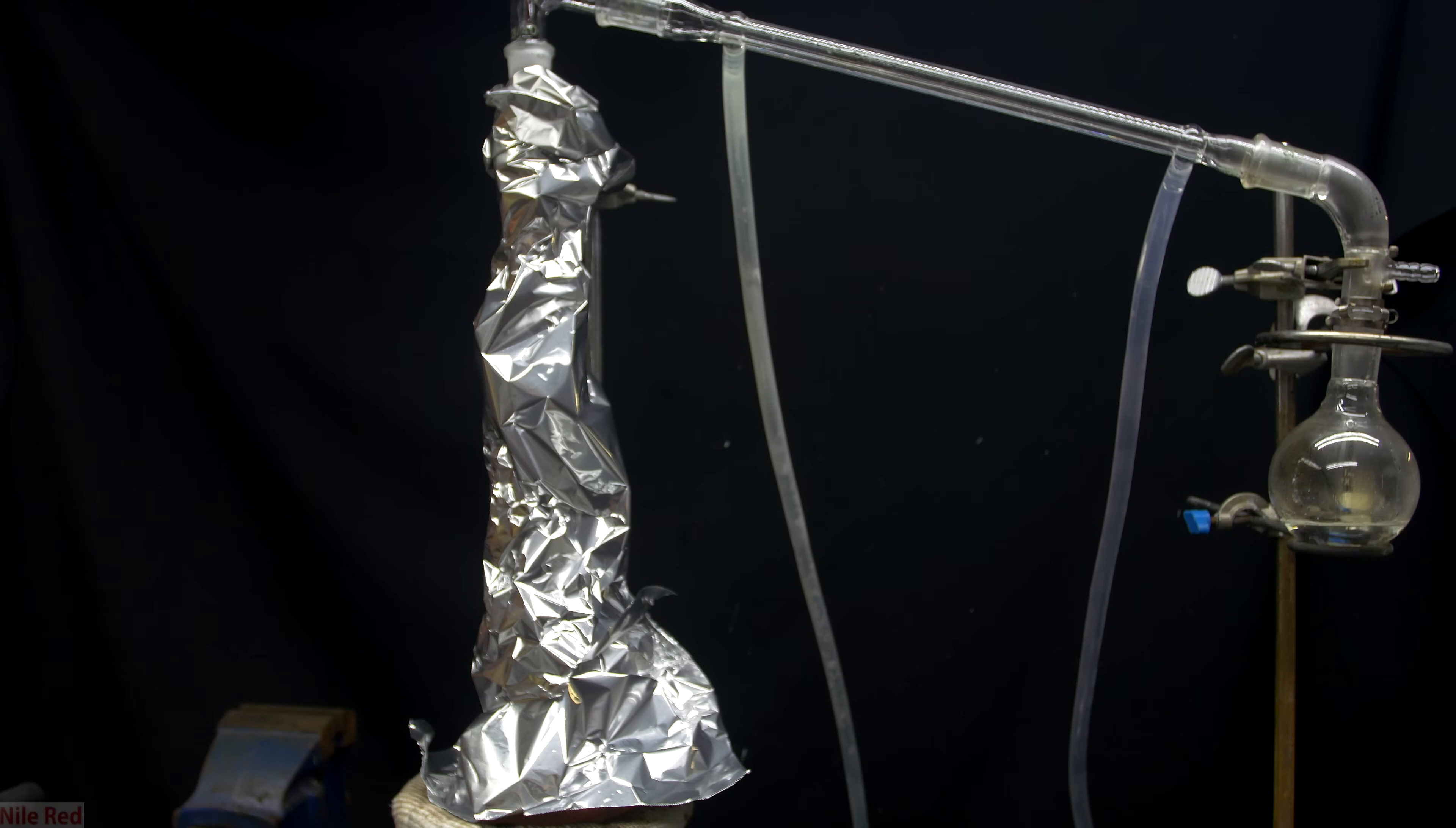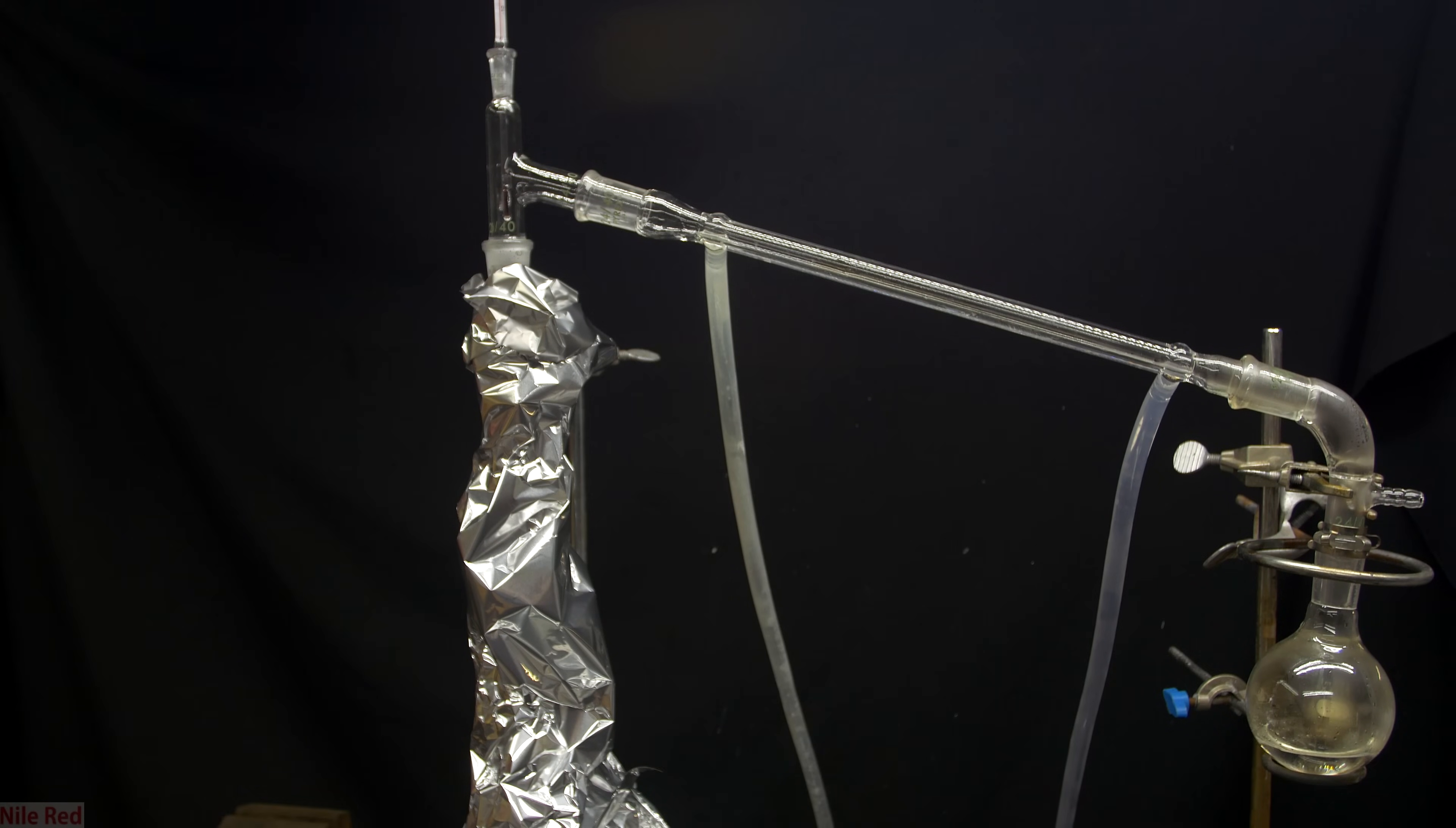One important thing to do with fractional distillations is to insulate the column, and I do this using a little bit of aluminum foil. The column is quite long and if it's left exposed to air, it can be cooled enough that everything just recondenses in the column and never makes it over.